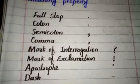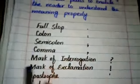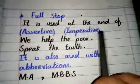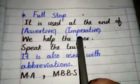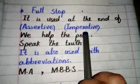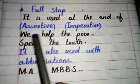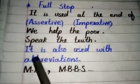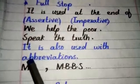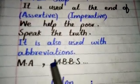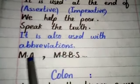First we will discuss the full stop. It is used at the end of assertive and imperative sentences. For example: 'We help the poor.' 'Speak the truth.' It is also used with abbreviations, for example: M.A., M.B.B.S.